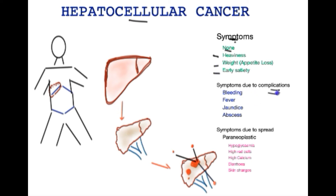Symptoms may also arise due to complications that occur secondary to liver cancer. If the cancer causes a rupture and bleeding, that leads to sudden onset of abdominal pain which may be accompanied by fainting, and this is not uncommon.